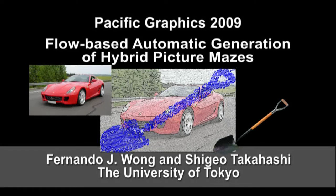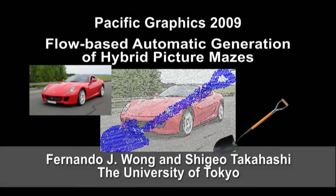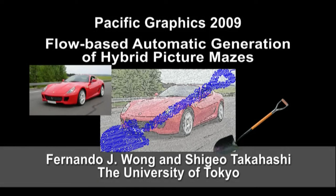This video explains our approach for automatically generating hybrid mazes from pictures. We call hybrid a type of maze whose walls are used to depict an image and, once solved, its solution path provides a roughly abstracted version of another one, just like the one you're seeing right now.